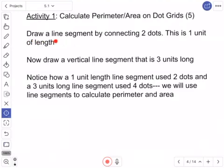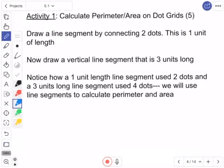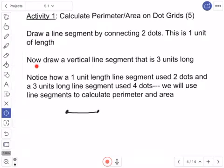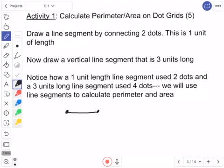If you did it on Seesaw, I'd be so excited because I get to see all the things that you were doing with this. You would make me super happy. Or you could still do it even on Explain Everything and then take a screenshot and put it on Seesaw too. But what we're going to be starting with is we're going to draw a line segment by connecting two dots. This is one unit of length. So if you remember, a line segment has two endpoints and then a line that connects between. That is one unit of length. So this is going to be tying a lot back into our unit seven. Now, I'm going to draw a vertical line that is three units long. So I'm going to do kind of the same thing. I'm going to be doing some connecting here, though.